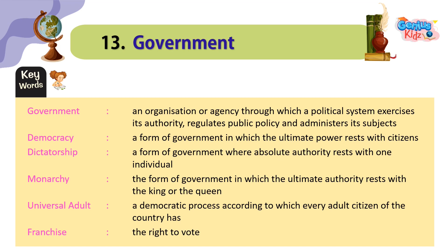Keywords. Government: an organization or agency through which a political system exercises its authority, regulates public policy, and administers its subjects. Democracy: a form of government in which the ultimate power rests with citizens. Dictatorship: a form of government where absolute authority rests with one individual. Monarchy: the form of government in which the ultimate authority rests with the king or the queen. Universal Adult Franchise: a democratic process according to which every adult citizen of the country has the right to vote.